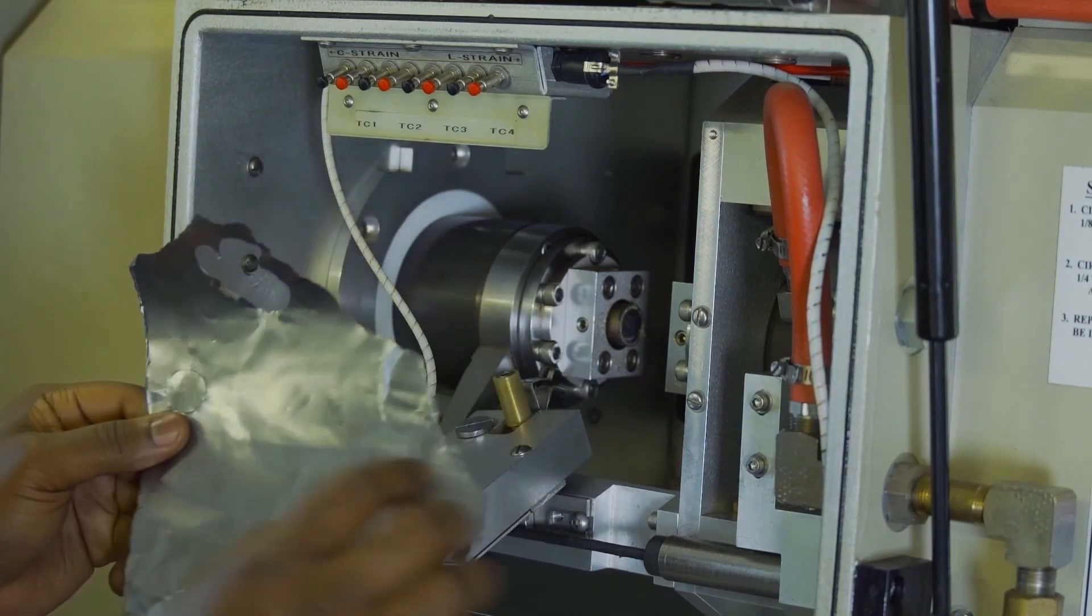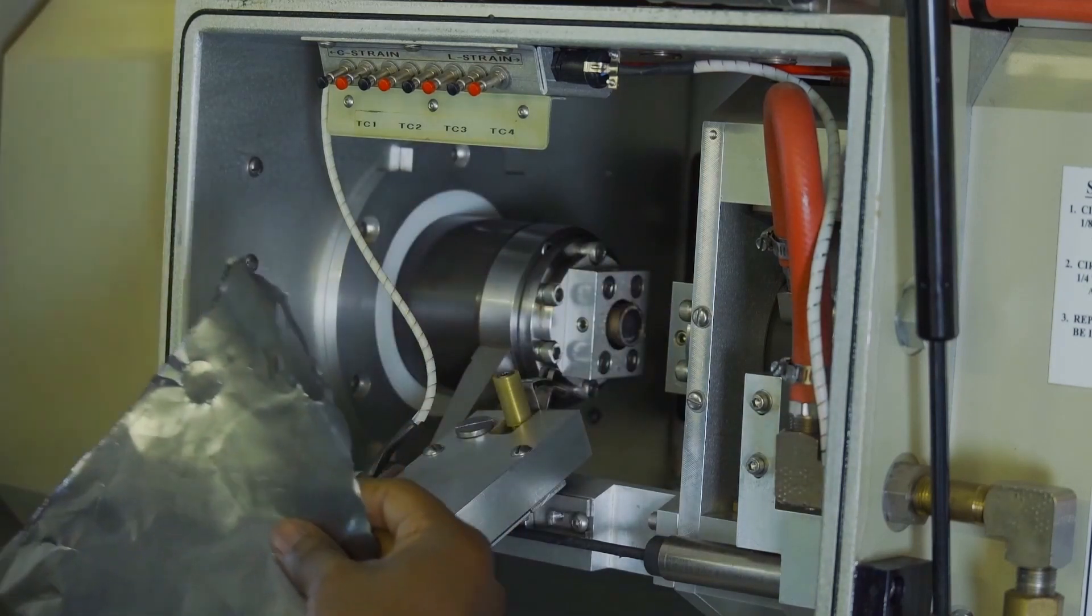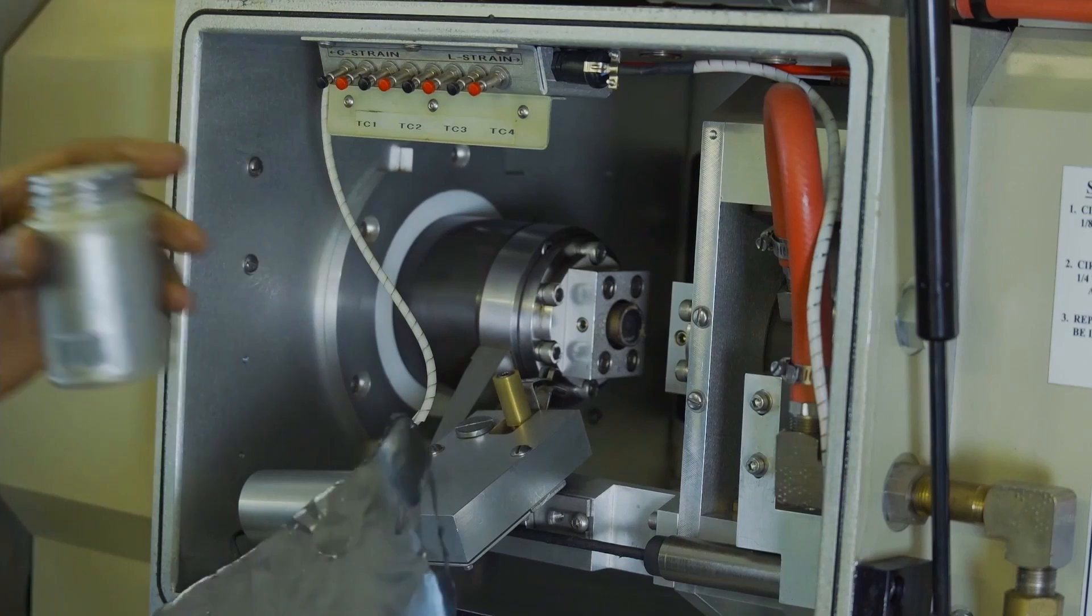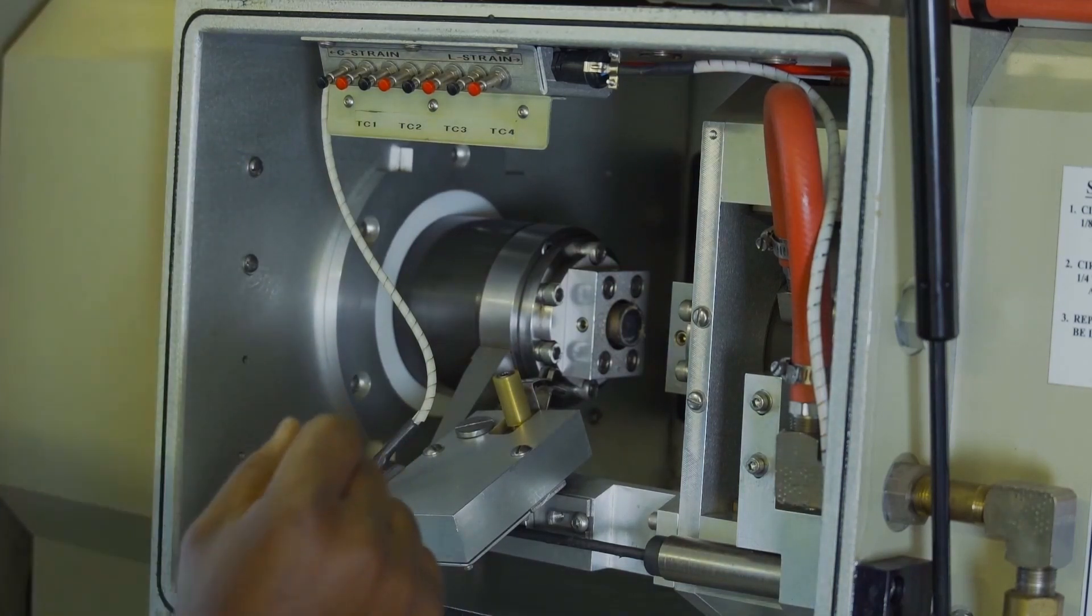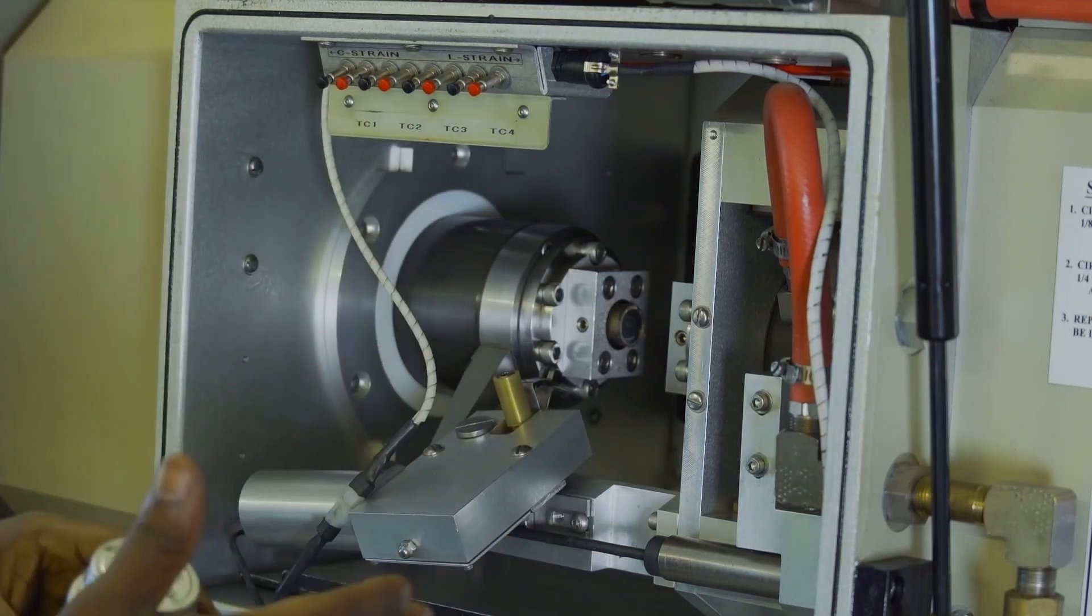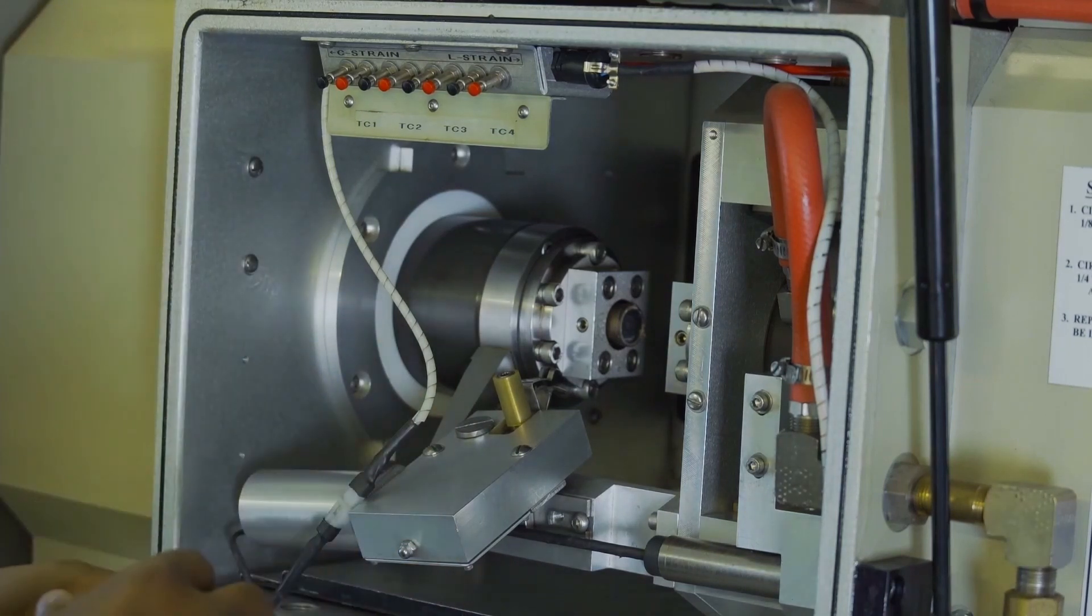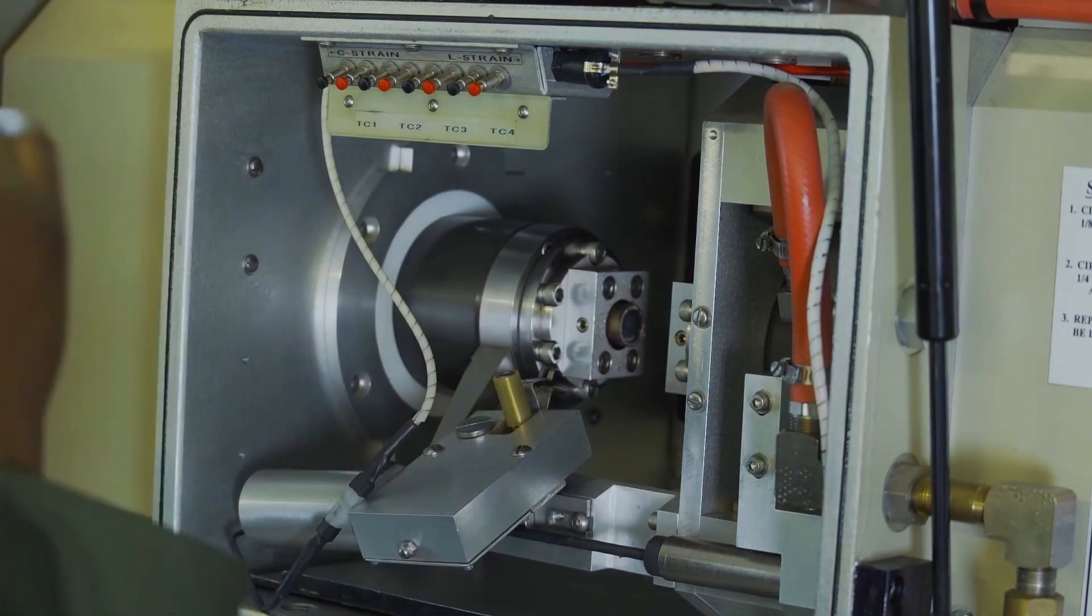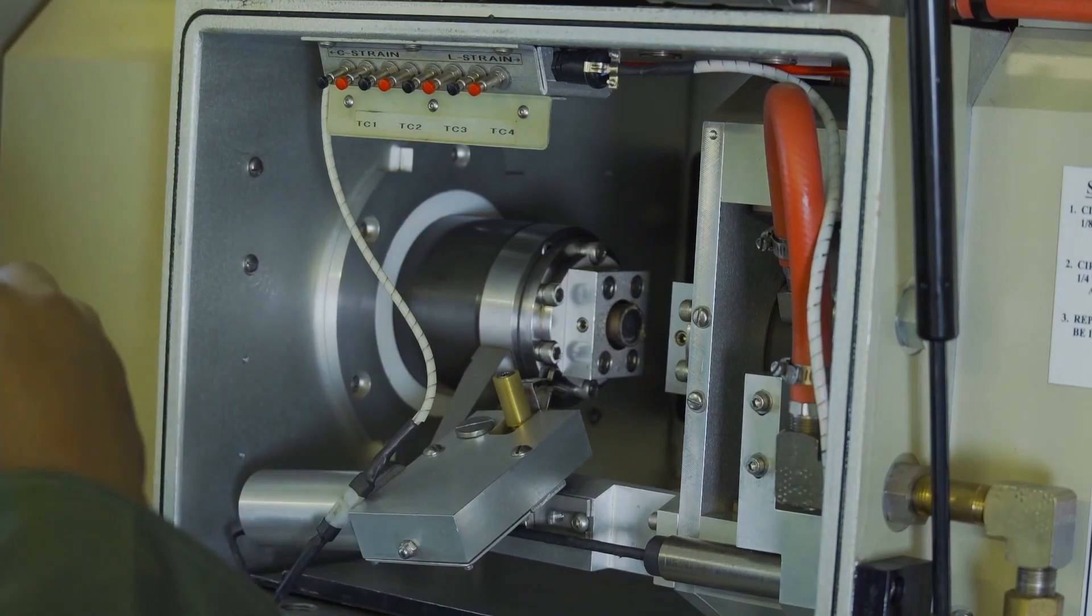The graphite foil is cheaper and then you attach this to the anvil using the nickel paste. But for aluminum it's better to just use the nickel paste. The essence of this is to minimize friction because friction could affect your results. Frictional effects would affect the flow stress that you obtain from the test.